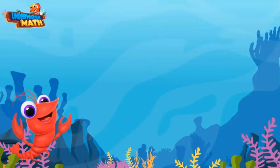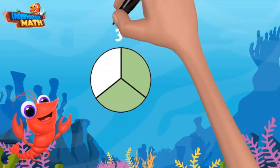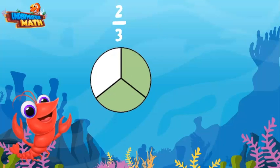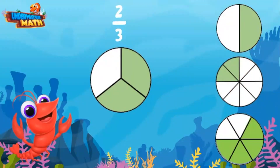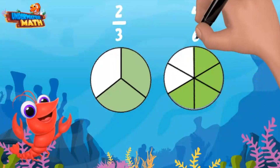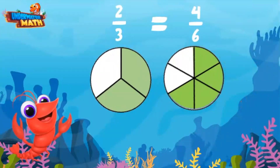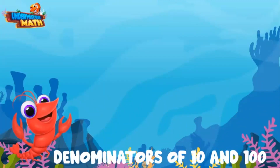Great work! Let's take a look at another example. Here we have two-thirds. Which of the three models is equivalent to two-thirds? It looks like this one is — it has more pieces, but it is covering the same amount of the whole. This model has six pieces and four are shaded in. This means four-sixths is equivalent to two-thirds.